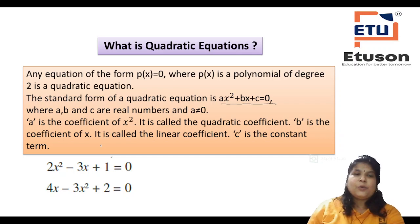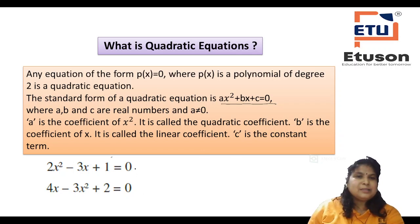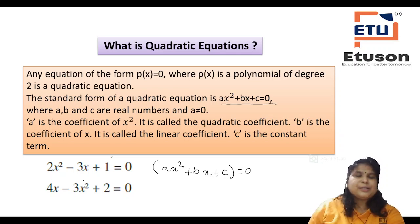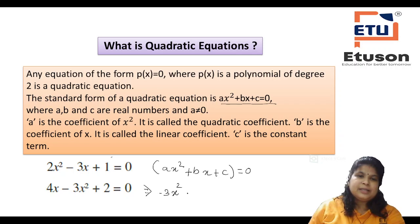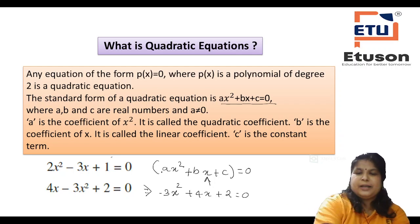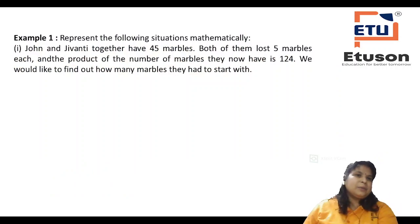B is the coefficient of X. It is called the linear coefficient because it is the coefficient of variable X with degree 1. C is the constant term. Here are some examples of quadratic equations in the form AX² + BX + C = 0. For example: 2X² − 3X + 1 = 0, and 4X − 3X² + 2 = 0, which can be rewritten in standard form as −3X² + 4X + 2 = 0. Now let us solve some examples.